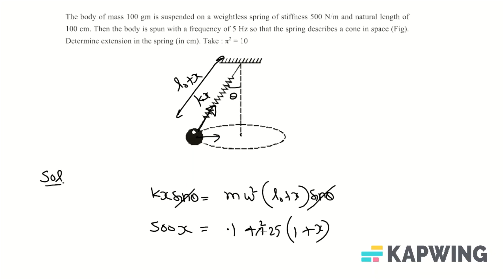π² approximately can be written as 10, so this will be 100 plus 100x. From here, 400x will be 100, and x equals 100 upon 400, which is 1/4 meter, that will be 25 centimeters.